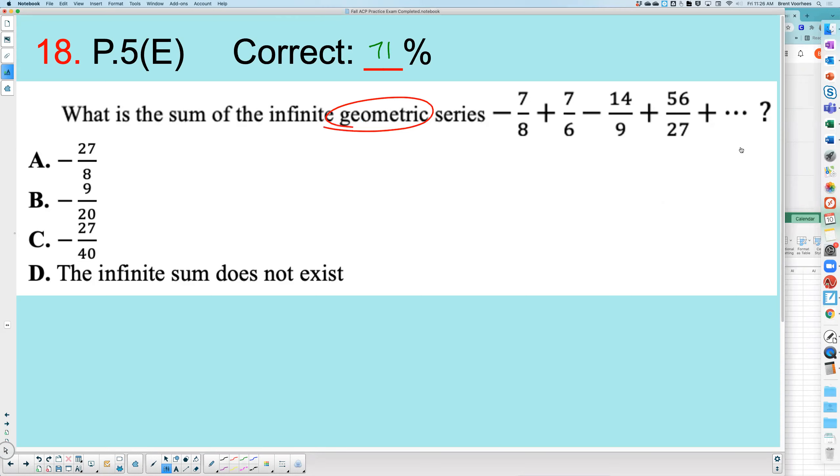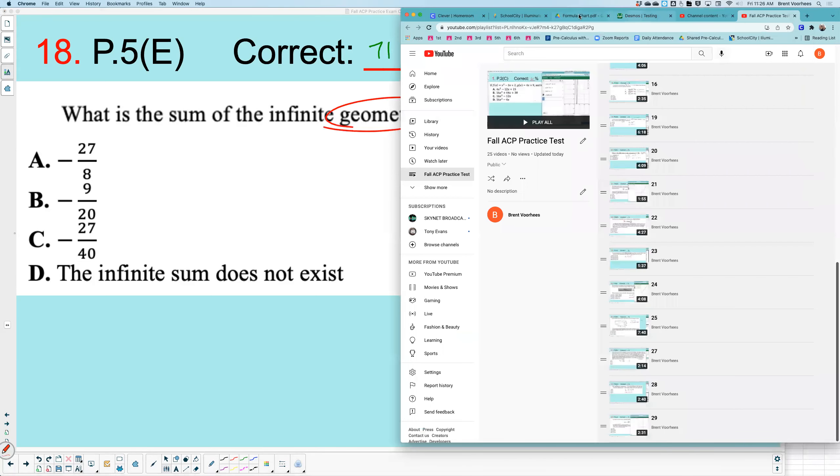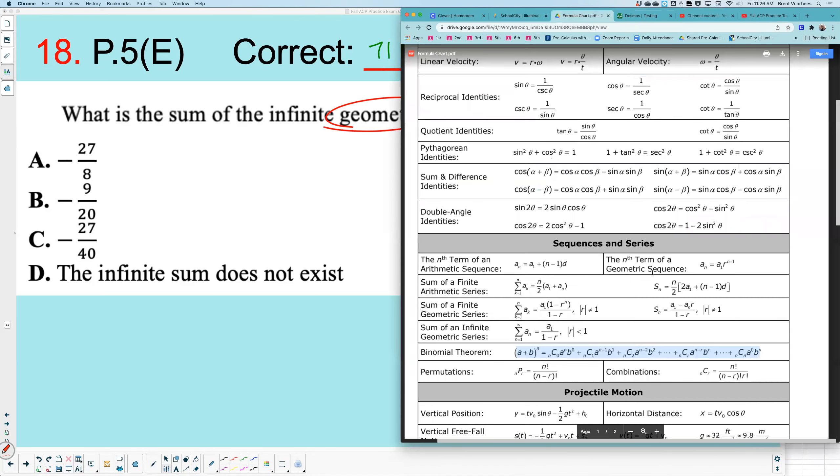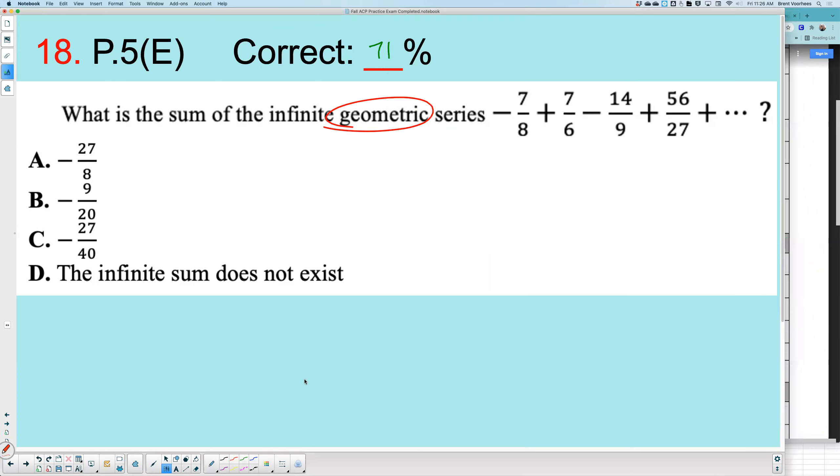So we can go to our formula chart here. Formula chart, where are we? And it says geometric, so I know I'm using that formula. So I'll copy that down. a_n equals a_1 times r to the power of n minus 1.